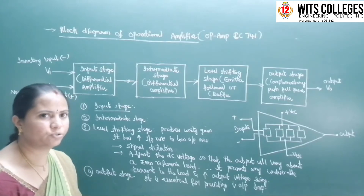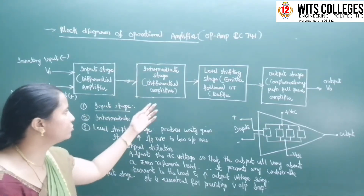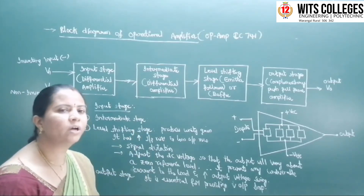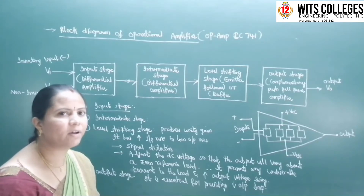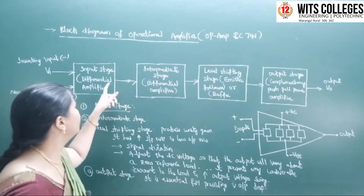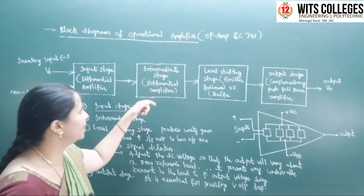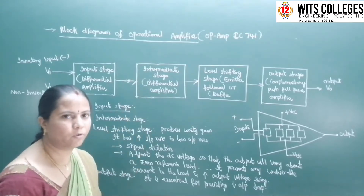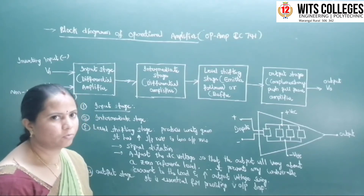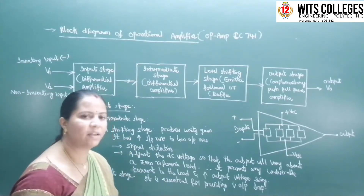In the input stage, the differential amplifier with a constant current source provides a high amount of common mode rejection ratio (CMRR). Coming to the second stage — the intermediate stage — this is also another differential amplifier. The output of the input stage is fed into the intermediate stage, which is again a differential amplifier that further improves and provides a high amount of voltage gain.